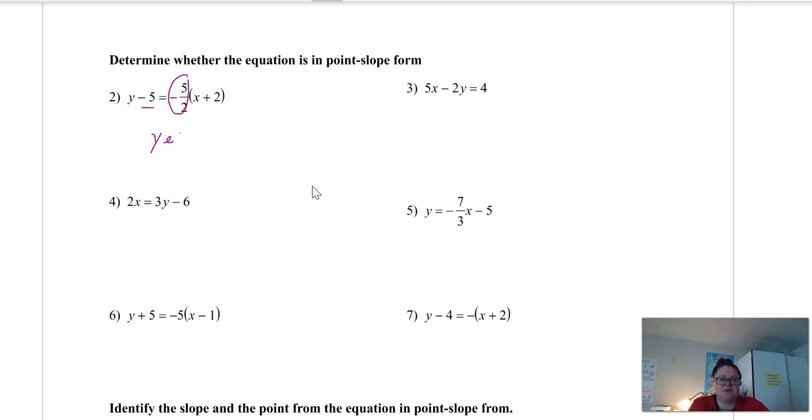How about this one? x and y are on the same side of the equal sign. Not in point-slope form. Same thing here, it starts with 2x. Point-slope form is always going to start with y, and then plus or minus a number. So this is a no. Here, that's in slope-intercept form. You should know that one. So it's not in point-slope form, because the only time point-slope and slope-intercept are the same is for like y equals x.